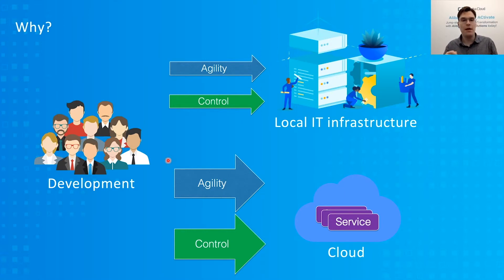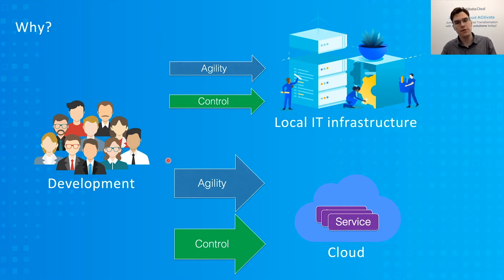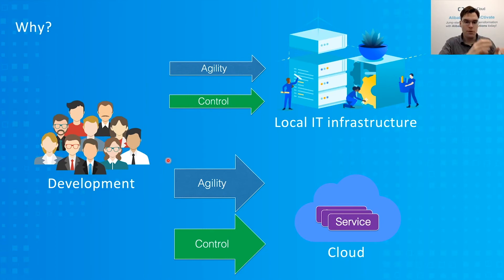The nice thing about public cloud architecture is that we not only provide a web console, but we also provide APIs. This means that developers can write scripts that interact with the servers of Alibaba Cloud in order to create infrastructure, manage the infrastructure, and install the application directly inside the cloud. So the role of DevOps is to write scripts that completely automate the installation of applications into the cloud.